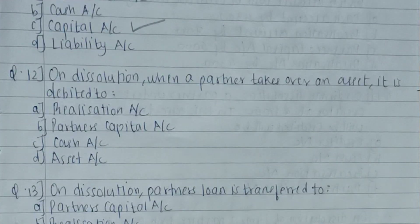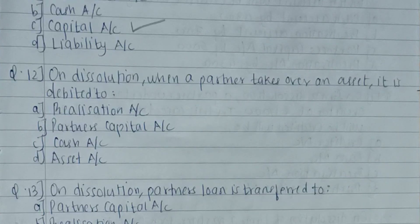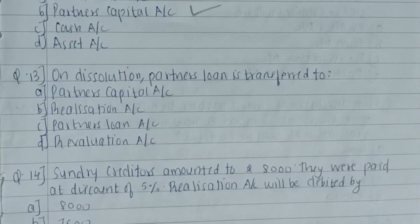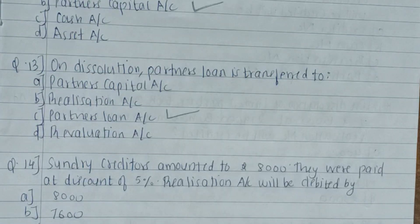Twelfth question: on dissolution, when a partner takes over an unrecorded asset, it is debited to which account? Whenever a partner takes any asset, it is written on the credit side of the realization account. Since it is credited in realization, the opposite entry — the debit — goes to the partner's capital account. The answer is partner's capital account. Thirteenth question: on dissolution, the partner's loan is transferred to which account? It is transferred only to the partner's loan account.